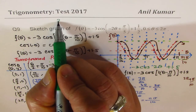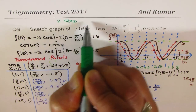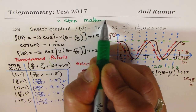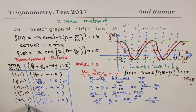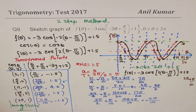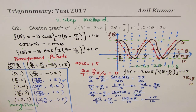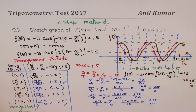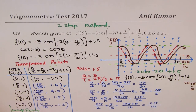I hope you understand and appreciate the two-step method for graphing, as well as the image-points method. Both are very good methods to sketch any trigonometric function. Thanks for watching — feel free to write comments, share your views, and if you like and subscribe, that would be great. All the best!